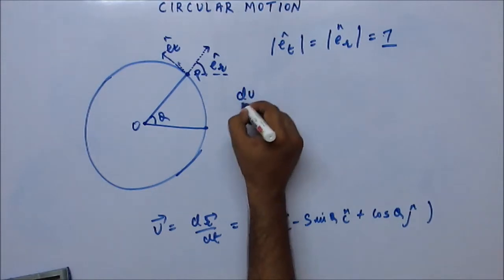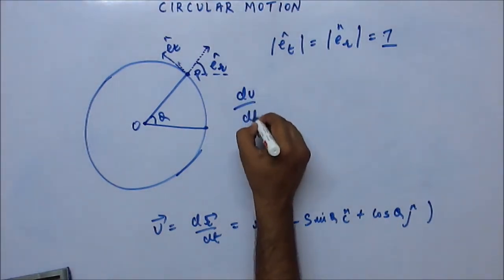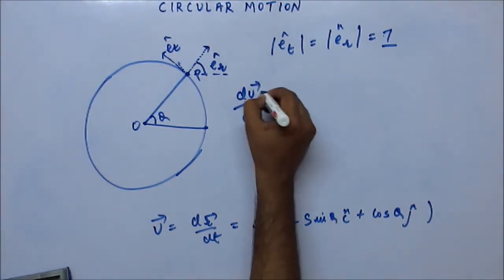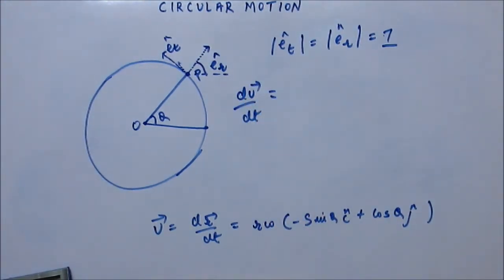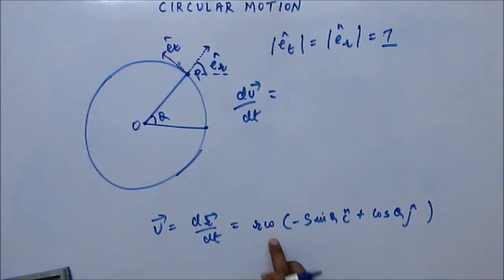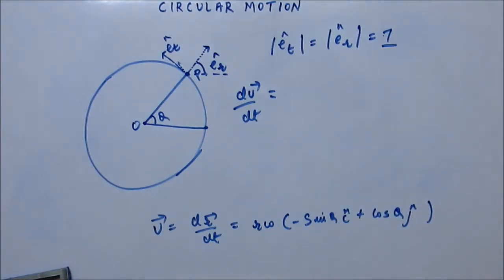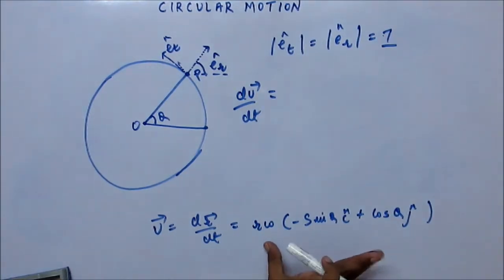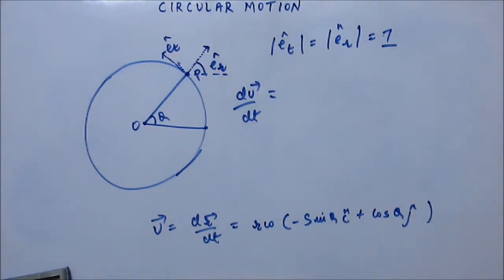When you find dv by dt, this omega may also change — omega may not remain constant. We are considering a general case here. So again, only r is constant. You have one term and this is the second term. While differentiation, you have to apply the product rule.